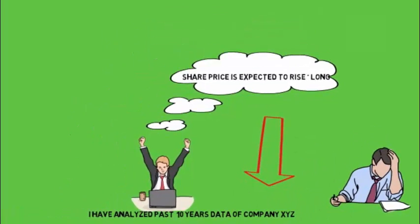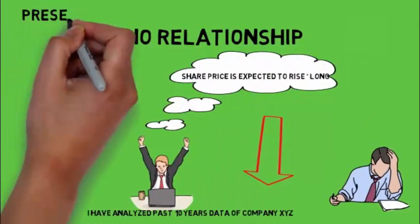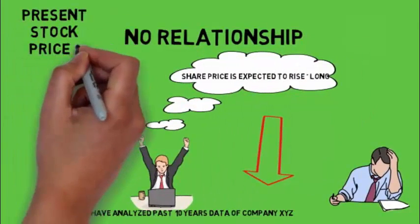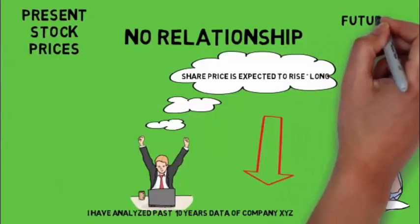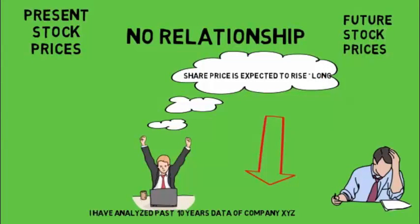So the theory is that there is no relationship, there is nothing common between the present stock price or the past data and the future stock price. That is, today if the stock price is 100, so if you are thinking the stock price will be 150 or 50, there is no relationship.